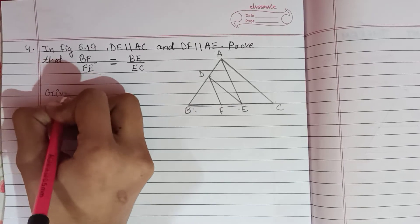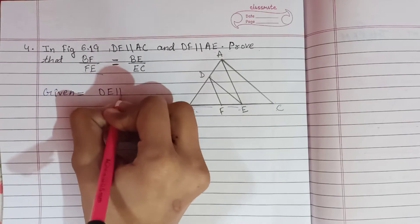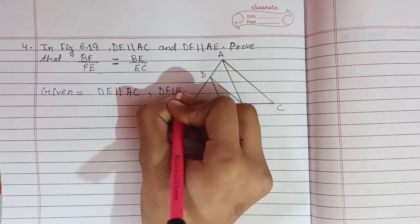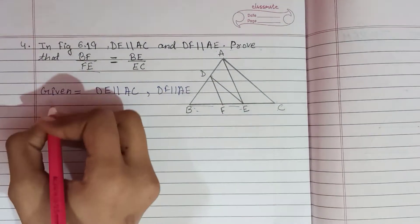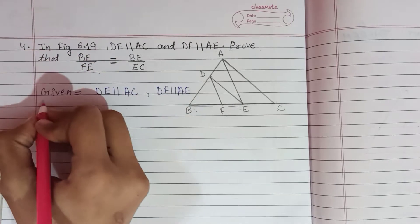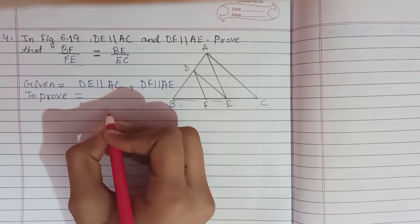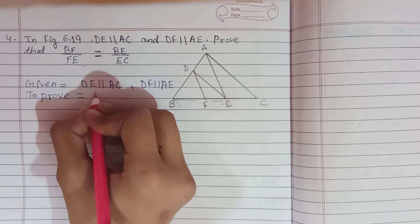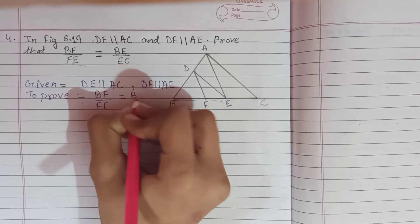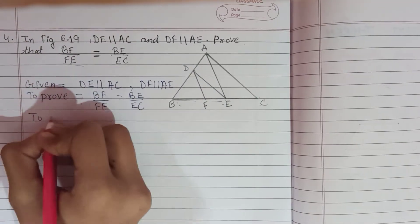First of all we have to write what is given. It is given that DE is parallel to AC and DF is parallel to AE. Now we have to write what we have to prove: BF by FE is equal to BE by EC. Let's start proving it.